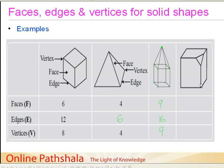Now let us find out the faces, edges and vertices for this shape. This is nothing but a small part cut out from a cube — like cutting a corner off a block of cheese. A cube has six faces, and with the additional cut surface, we have seven faces. A cube has twelve edges, and three more are formed by the cut, giving us fifteen edges. For vertices, a cube has eight, but we cut one off, leaving seven, and three new corners appear from the cut, giving us ten vertices total.